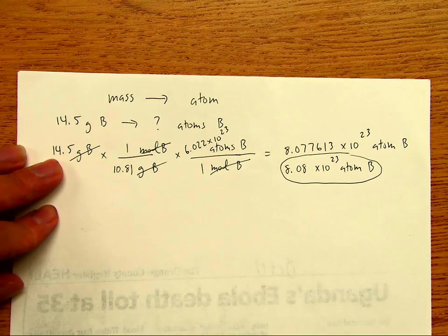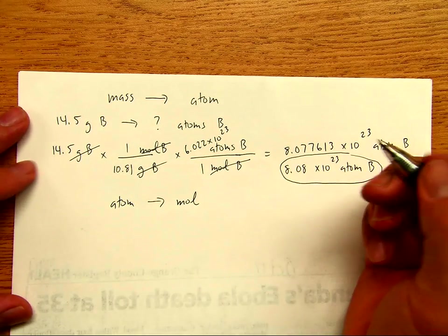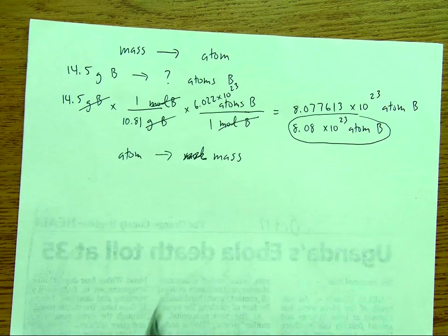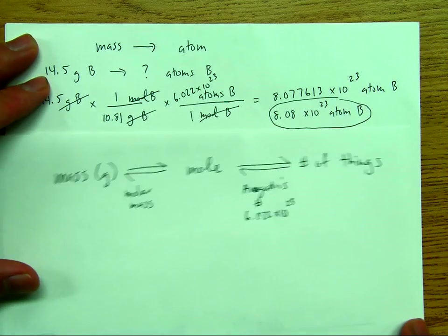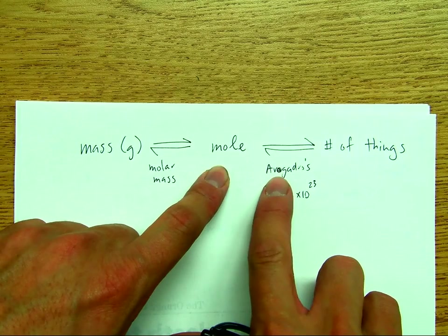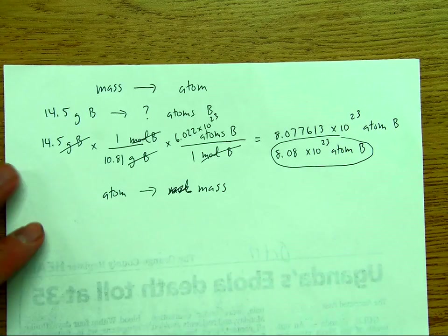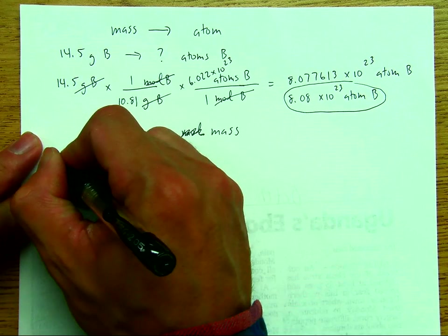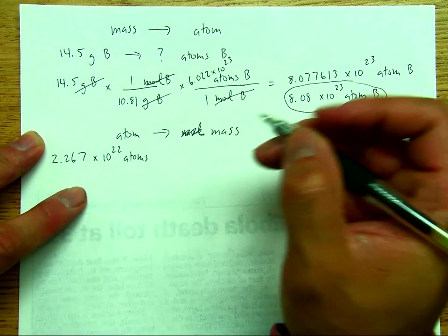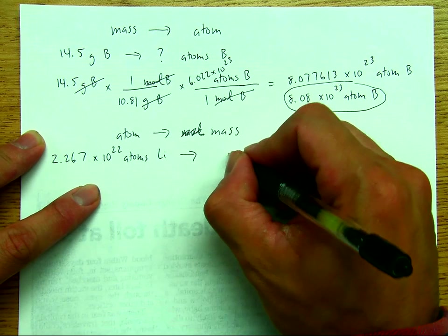For the next example, we'll convert from atoms to mass. To convert from atoms to mass, we start on the right with the number of things, convert to mole using Avogadro's number, and then from mole we convert to mass using the molar mass from the periodic table. We are given 2.267 × 10²² atoms of lithium (Li), and we want to convert this into grams of lithium.